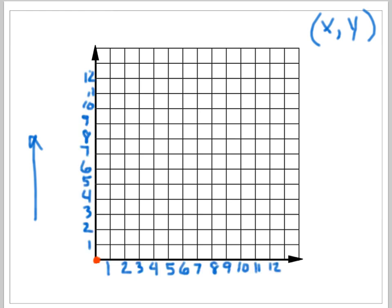All right, so here's our coordinate grid, and our x-axis is labeled, and our y-axis is labeled. So I'm going to go ahead and give you an ordered pair, and you're going to see if you can find where it is on this grid before I put the dot there.